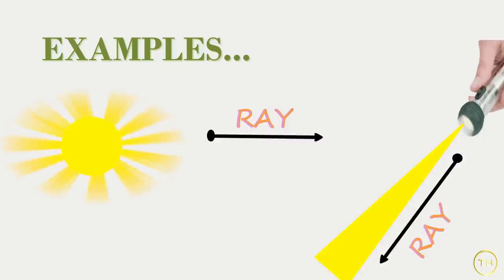A ray is a part of a line. It starts at one point and goes forward continuously in the same direction. The starting point of a ray is called its origin.